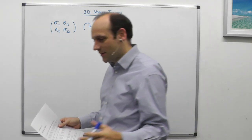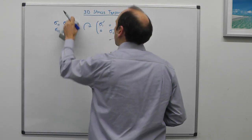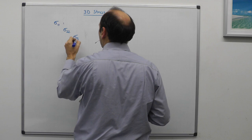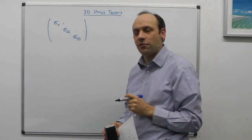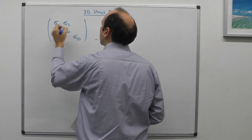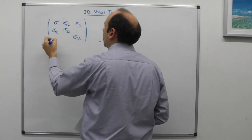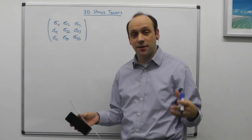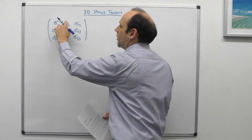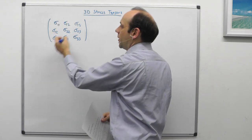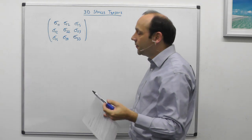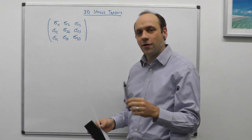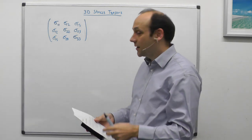Taking that into the 3D case: we've got a stress tensor with three normal stresses sigma 11, sigma 22, and sigma 33, and three off-axis stresses sigma 12, sigma 23. It's a square symmetric tensor with six different numbers — three diagonal terms and three off-diagonal symmetric terms. Since these are real numbers, it must have three real eigenvalues (principal stresses) and three corresponding orthogonal eigenvectors.